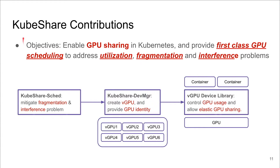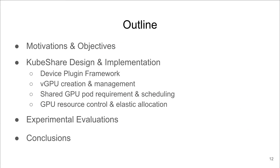In this work, we propose and implement KubeShare, which extends Kubernetes to provide first-class GPU scheduling and address utilization, fragmentation, and interference problems. To achieve our goal, KubeShare consists of three main components: a scheduler to deal with fragmentation and interference problems, a device manager to create vGPUs and provide GPU identity, and a device library to control GPU usage and allocation during pod execution. In the next part of the talk, we will detail the design and implementation of these KubeShare components.